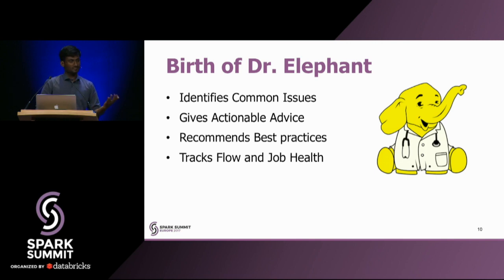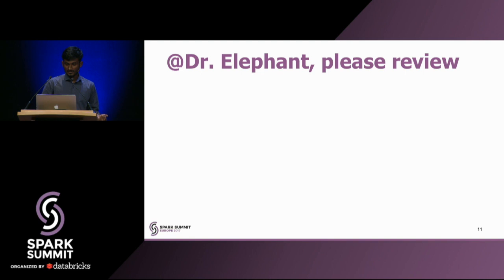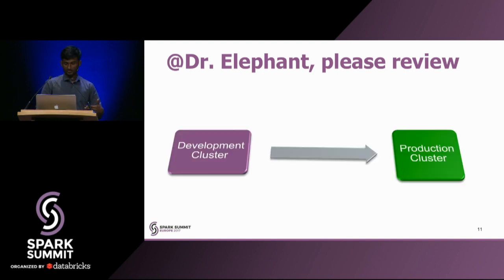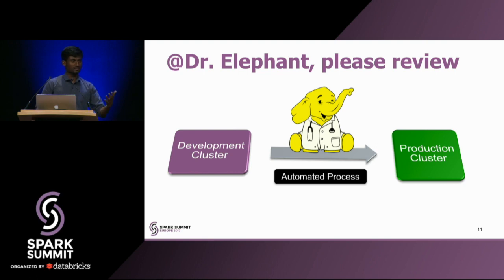Dr. Elephant gives you actionable advice on how you can fix issues. It recommends best practices, lets you track the health of your job, and lets you keep a watch on important metrics, look at trends of your jobs, and much more. The manual review process was replaced and automated through Dr. Elephant. Every flow that was getting reviewed is now automatically reviewed — we set up a Jira bot and the entire process was automated through it.